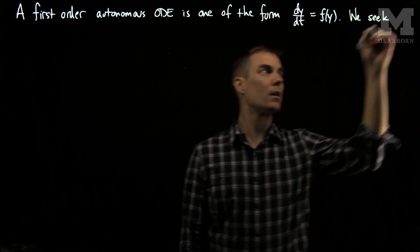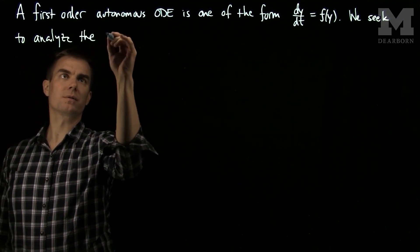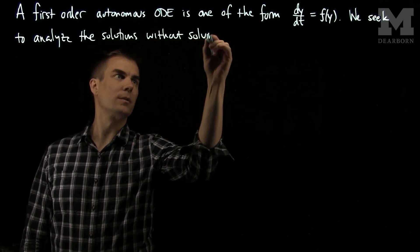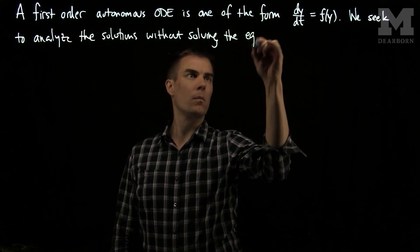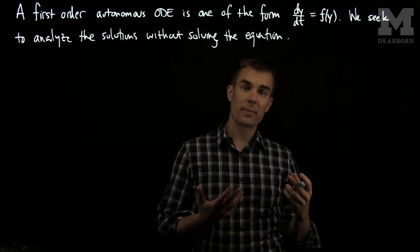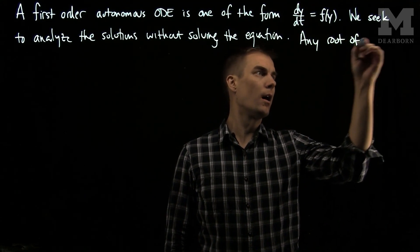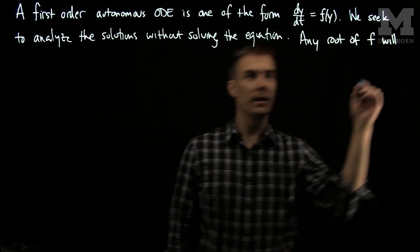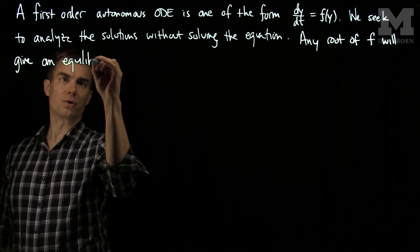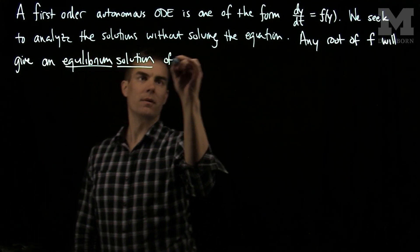We seek to analyze the solutions without solving the equation. We can find solutions to this equation through inspecting the function f. Indeed, any root of f will give a solution, which is referred to as an equilibrium solution of the equation.